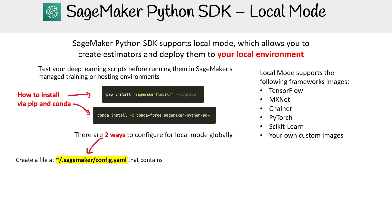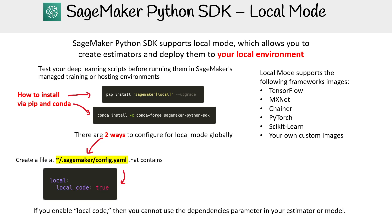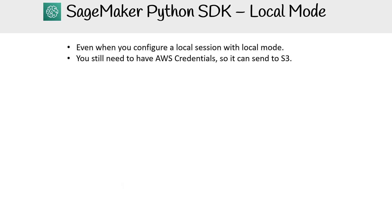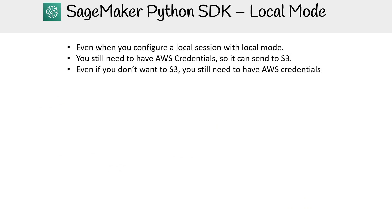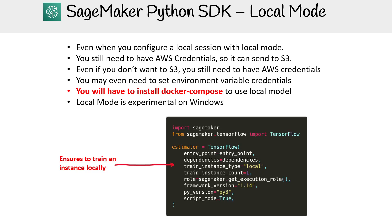There are two ways to configure local mode: globally or locally. If you use local code, you cannot use a dependency parameter in your estimator or model. There is a local session example shown. Even when you configure a local session with local code, you still need to have AWS credentials so you can send data to S3. You will also need to install Docker Compose to use local mode. Local mode is experimental on Windows — though that may have improved — and most people are likely running in a Linux environment or WSL anyway.